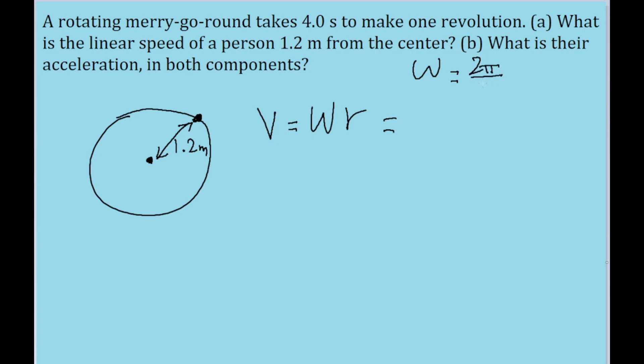which in our case is given to us as 4.0 seconds. So if you put that into your calculator, we find this as 1.57 radians per second. So our angular speed is 1.57 radians per second.